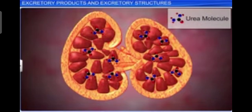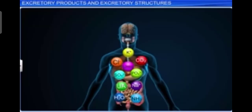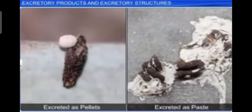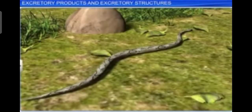Reptiles, birds, land snails, and insects excrete nitrogenous waste as uric acid in the form of pellets or paste with a minimum loss of water and are called uricotelic animals. These nitrogenous wastes are excreted as pellets and paste.